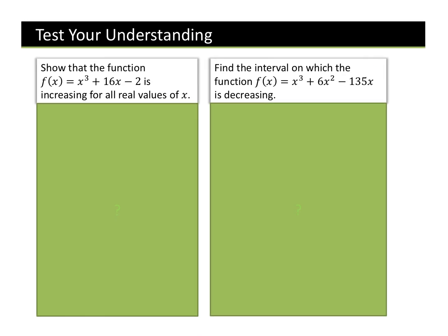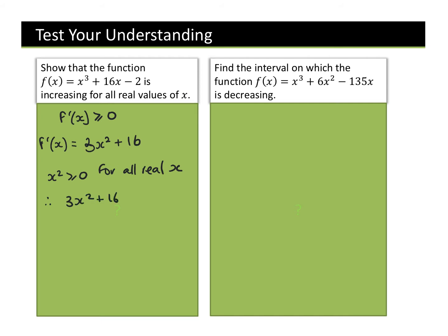Test your understanding — off you go. Show that the function x³ + 16x − 2 is increasing. We need to show that our gradient function is greater than or equal to zero. Our gradient function equals 3x² + 16. We know straight away that x² ≥ 0 for all real values of x. Therefore, 3x² + 16 ≥ 0 for all real x. Therefore, f(x) is increasing.